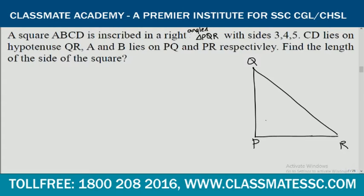CD lies on the hypotenuse. A and B lie on PQ, with A here, B here, C here, D here. So let us draw the square ABCD with the given conditions.